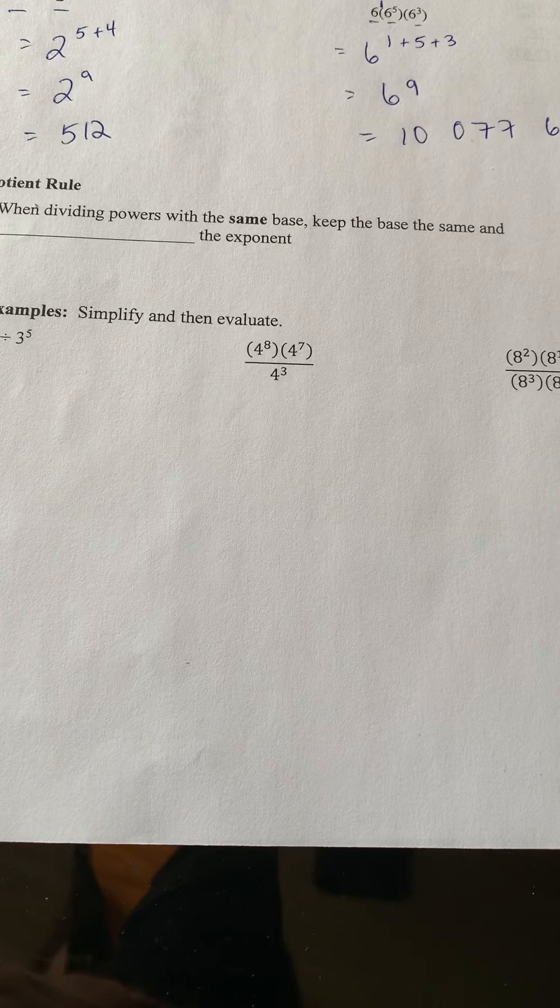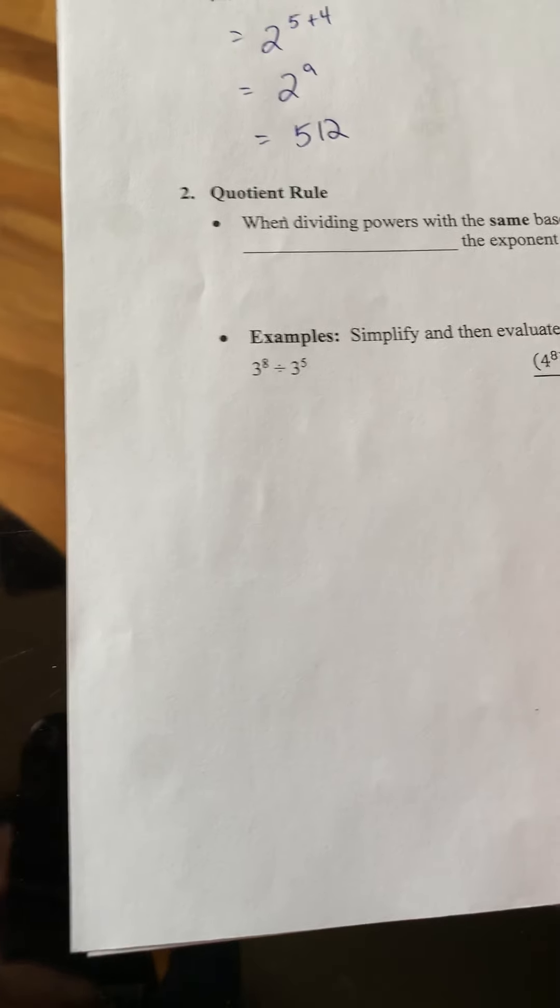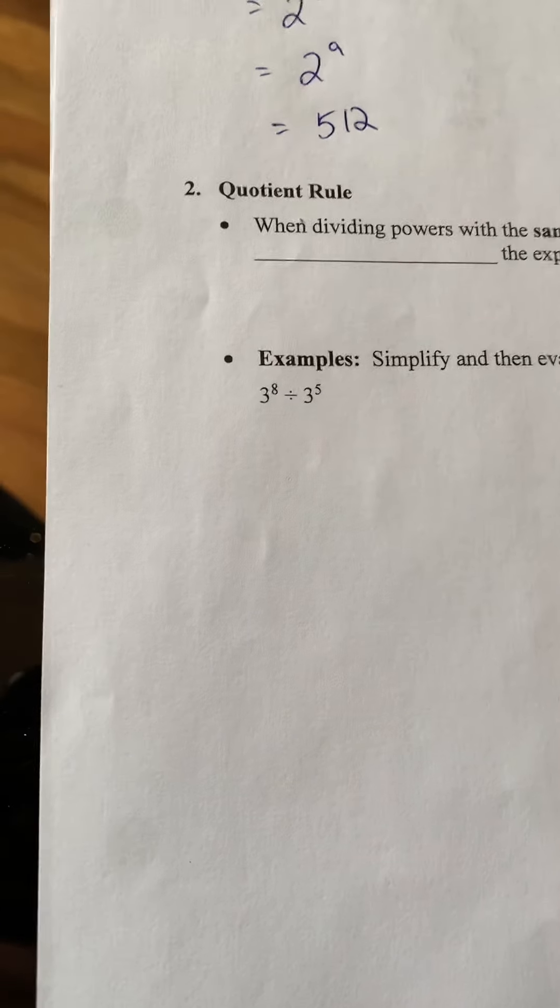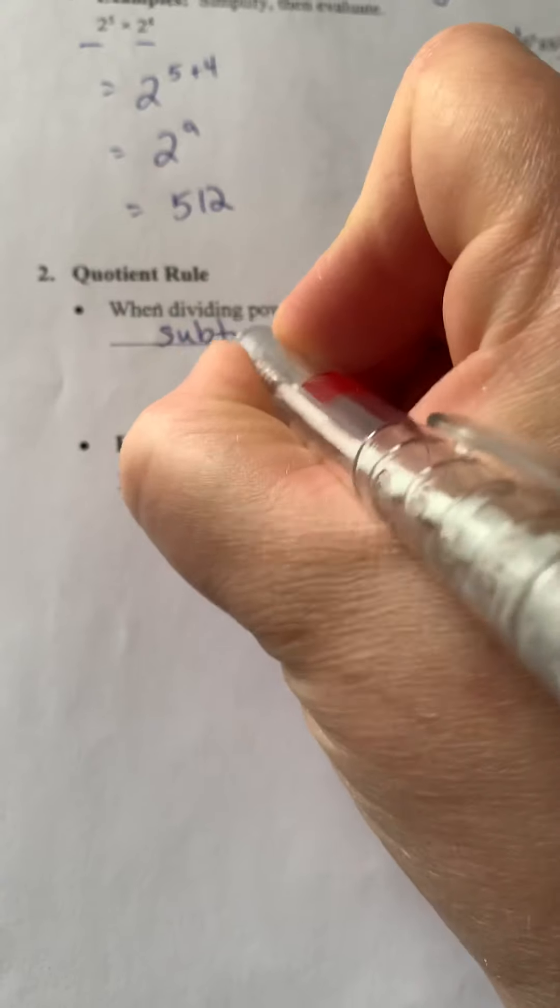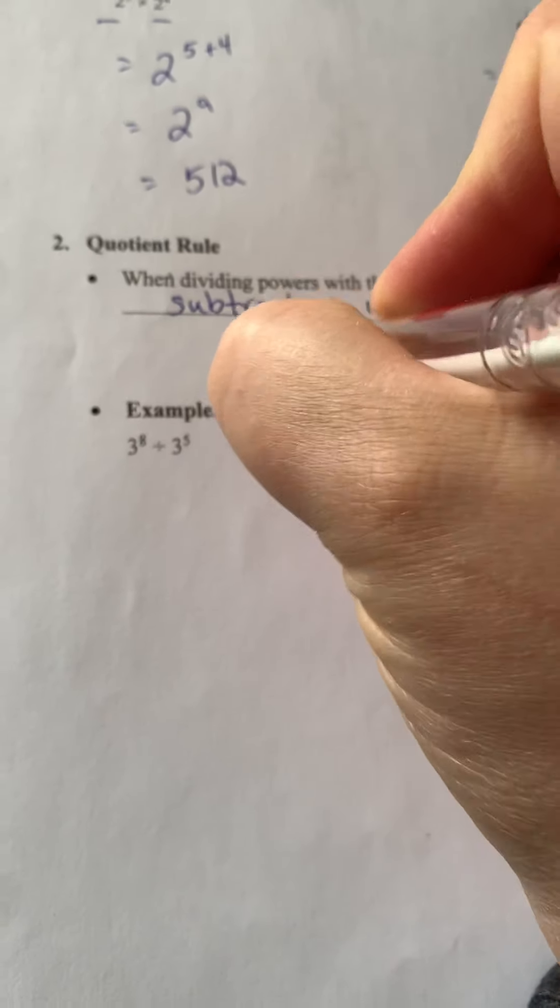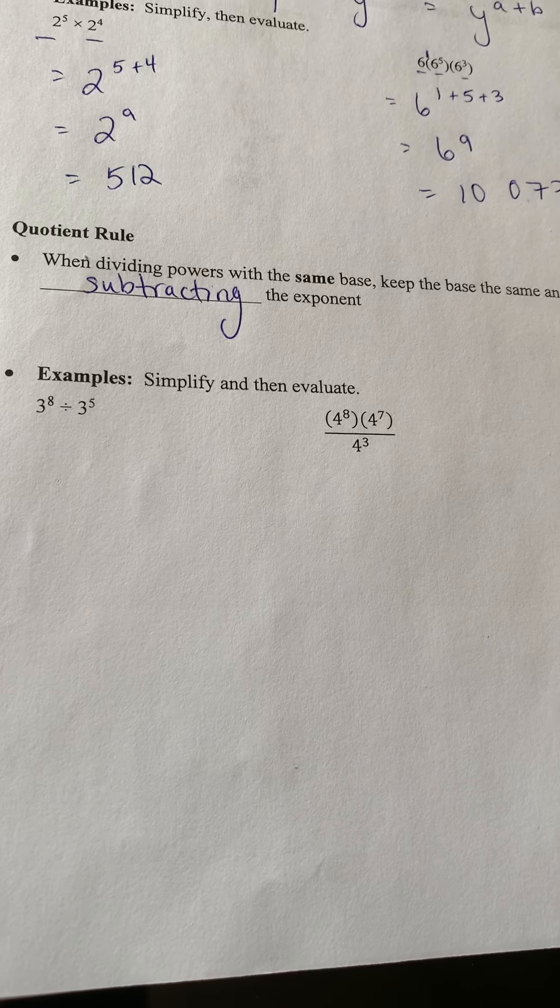So the quotient rule. When dividing powers with the same base, we keep the base the same. And now the opposite of multiplication is division. We added, you want to guess it, we are subtracting. So we are subtracting the exponents.